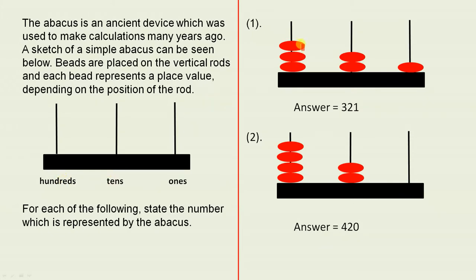So if we have 3 beads on that rod, 2 on this one, and 1 here, we have 3 hundreds, 2 tens, and 1 one. And that's 321.